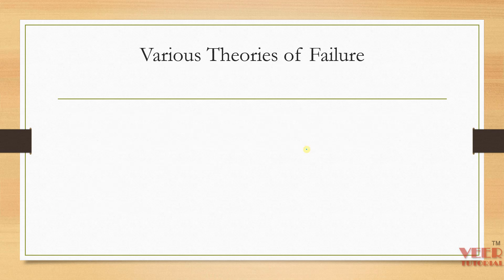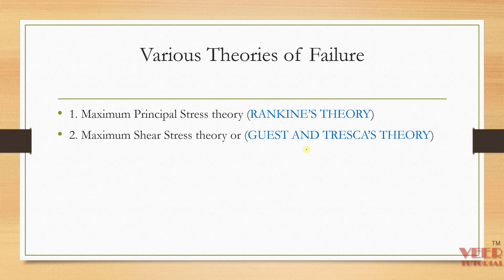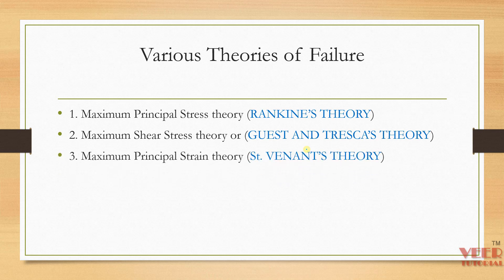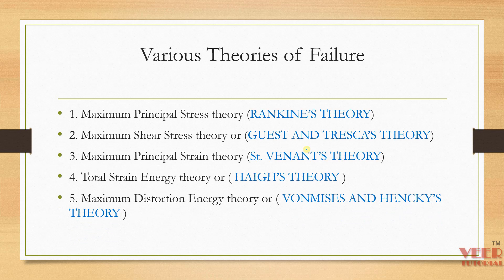There are five major theories of failure. The first is the Maximum Principal Stress Theory, called Rankine Theory. The second is the Maximum Shear Stress Theory, called Guest or Tresca Theory. The third is the Maximum Principal Strain Theory, called St. Venant's Theory. The fourth is the Total Strain Energy Theory, called Haigh's Theory. The fifth is the Maximum Distortion Energy Theory, called the Von Mises Theory. Of all five theories, the Von Mises Theory is most suitable for ductile materials.